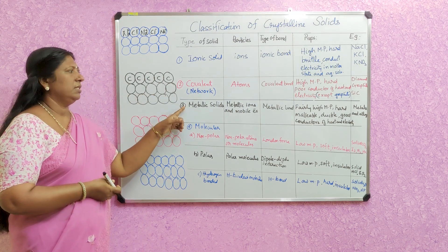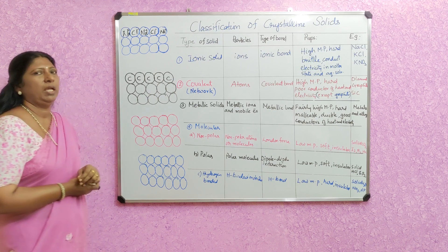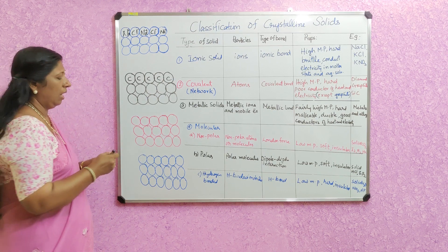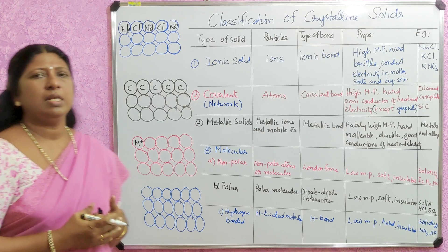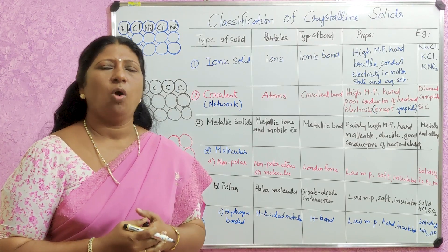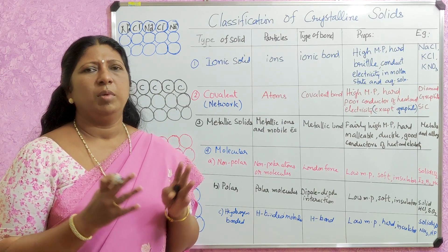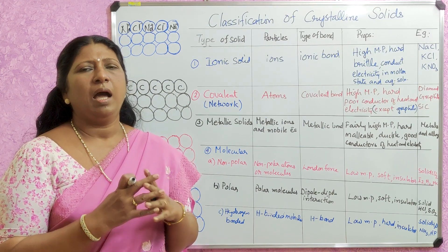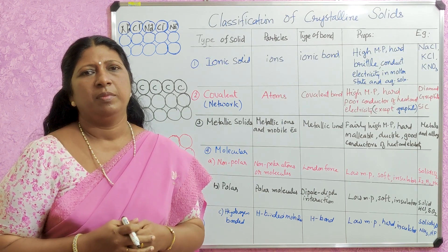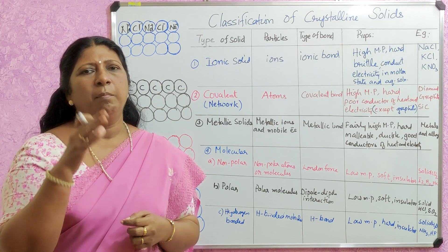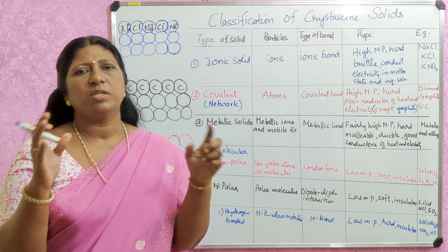The third classification is metallic solids. The constituent particles are metallic ions. Metals like gold, silver, and copper are examples. In metallic solids, the metallic ions are surrounded by a pool of electrons, because the electrons in the outermost shell are almost free.